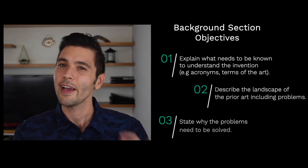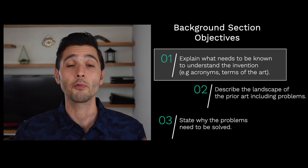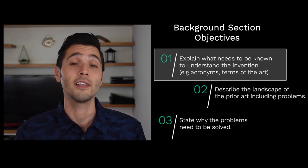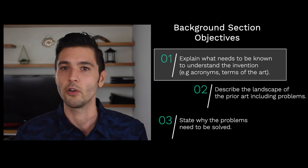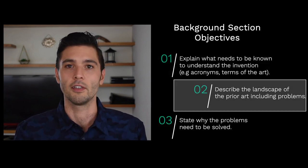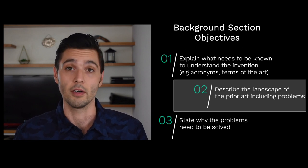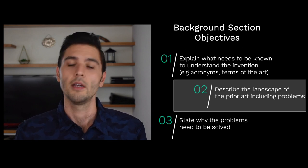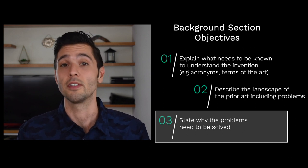Let's get started with the background section. What am I trying to achieve with the background section? I have three objectives. The first objective is to bring the reader up to speed on what they need to know to understand the invention — this could include terms of the art or acronyms, for example. The second objective is to introduce problems that exist in the prior art.